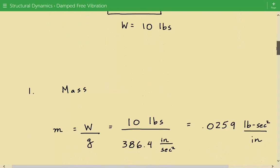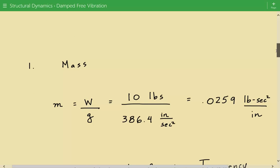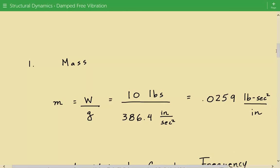The first thing we will do is calculate the mass. Mass is simply equal to the weight divided by the gravitational acceleration. So 10 pounds divided by 386.4 inches per second squared. So our mass is equal to 0.0259 pounds second squared per inch.